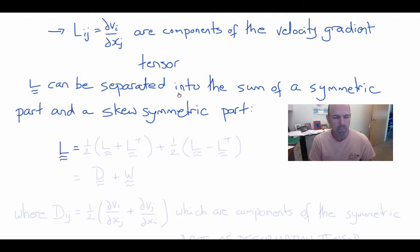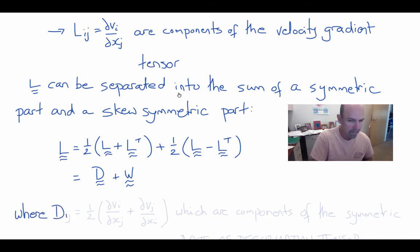L will equal a symmetric part, which is one-half of L plus L transpose, plus a skew symmetric part, one-half of L minus L transpose. And the symmetric part is called d, the rate of deformation tensor or the strain rate tensor, and the skew symmetric part is called w, the spin tensor.